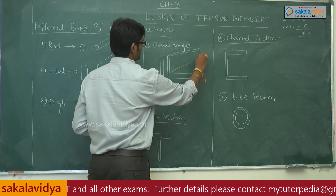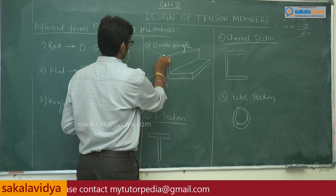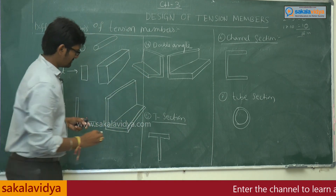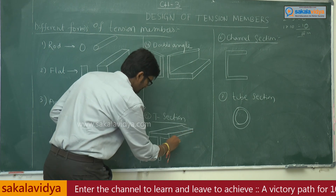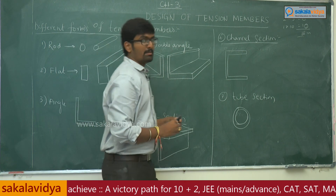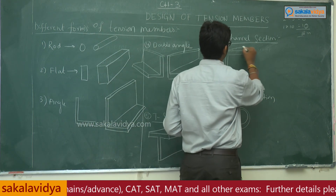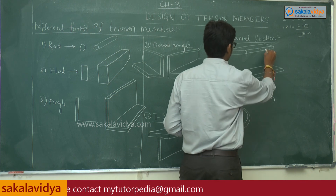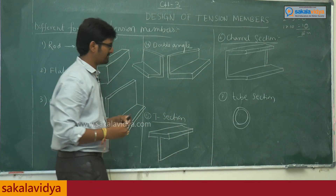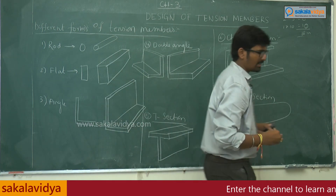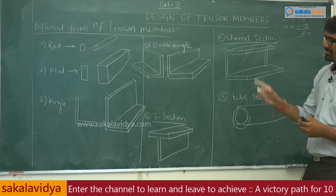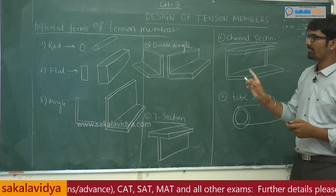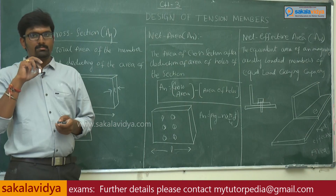The double angle section is drawn to show how it looks. Other forms include the T-section, channel section — which is a very important section — and the cube section. So the different forms of tension members are: rod, flat, angle, double angle, T-section, channel section, and cube section.